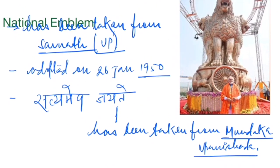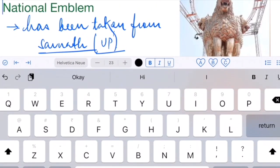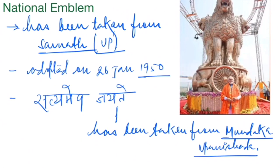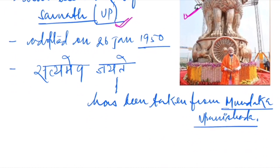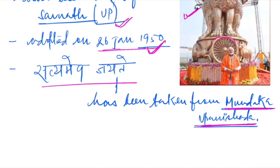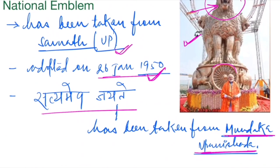The next topic is the National Emblem. There is a debate in India about the roaring lions, but what is important for us is: this Lion Capital was taken from Sarnath, Uttar Pradesh, and is related to Emperor Ashoka. It was adopted as the national emblem on 26th January 1950. The motto 'Satyameva Jayate' written below has been taken from the Mundaka Upanishad.